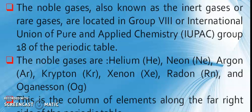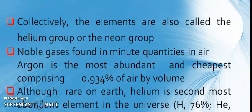The noble gases are Helium, Neon, Argon, Krypton, Xenon, Radon, and Oganesson. This is the column of elements along the far right side of the periodic table. My friend, you know this group is a subset of nonmetals. So collectively, the elements are called Helium group or Neon group.